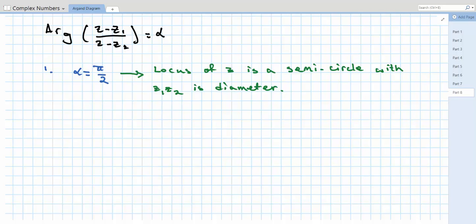Next case, what happens if alpha is plus or minus π/2? Well, we end up with two semicircles together combining to result in locus being a full circle,